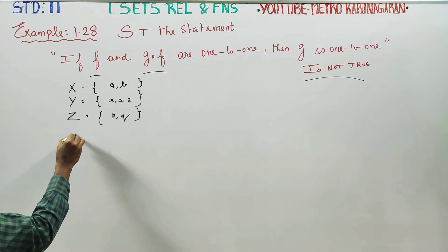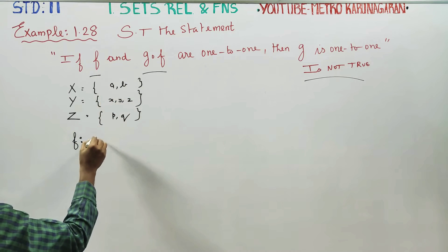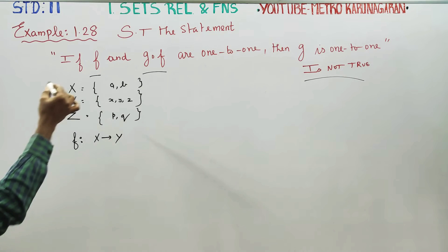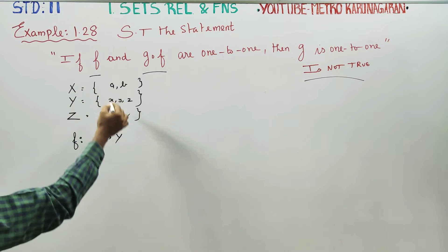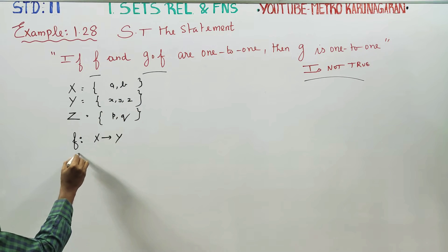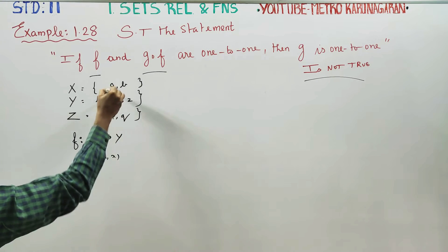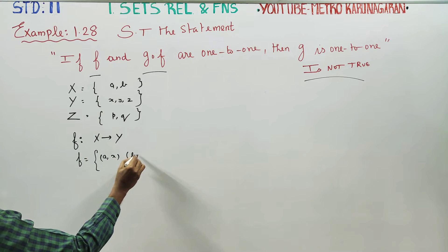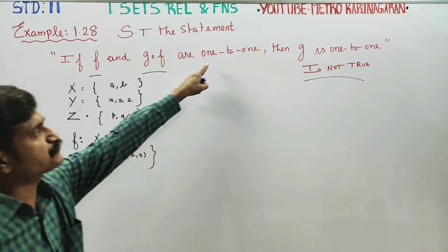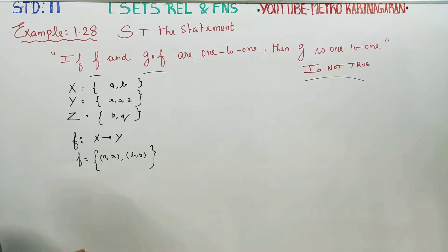f is a function defined from X to Y. We define the pairings: each element maps to a distinct image. Distinct elements map to distinct images, so f is a 1-to-1 function.